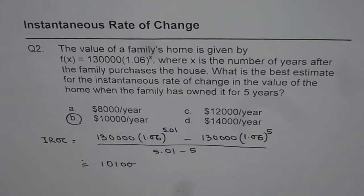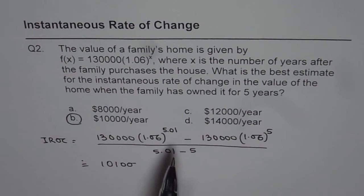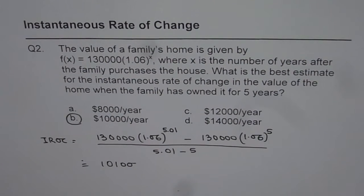Remember, when we say instantaneous rate of change at 5 years, you use a point very close to 5 and calculate the difference quotient to find the answer. Thank you.